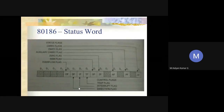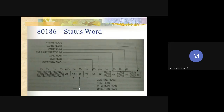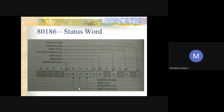Let me summarize quickly the function of each status word flag. The carry flag is set whenever a carry or borrow is generated after any arithmetic operation like addition or subtraction, and cleared otherwise. The parity flag is set whenever the lower-order eight bits of the result of any arithmetic or logical operation contain an even number of ones; if odd, it is reset.